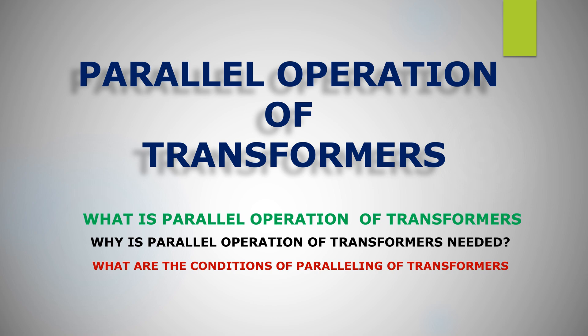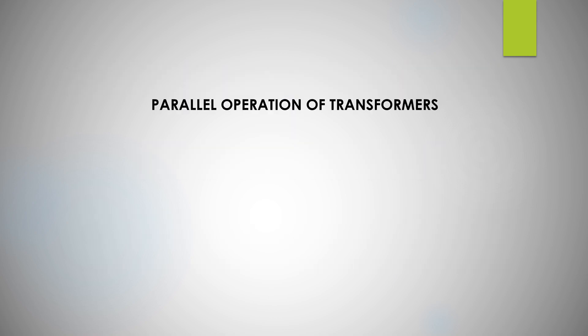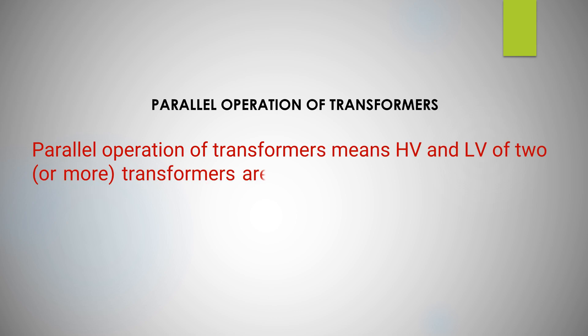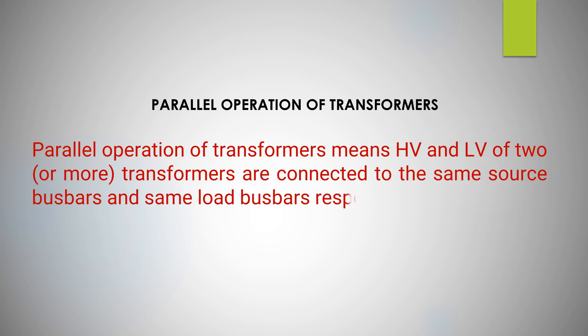Now please watch. At first, we have to know what is parallel operation of transformers. Parallel operation of transformers means HV and LV of two or more transformers are connected to same source busbars and same load busbars respectively.